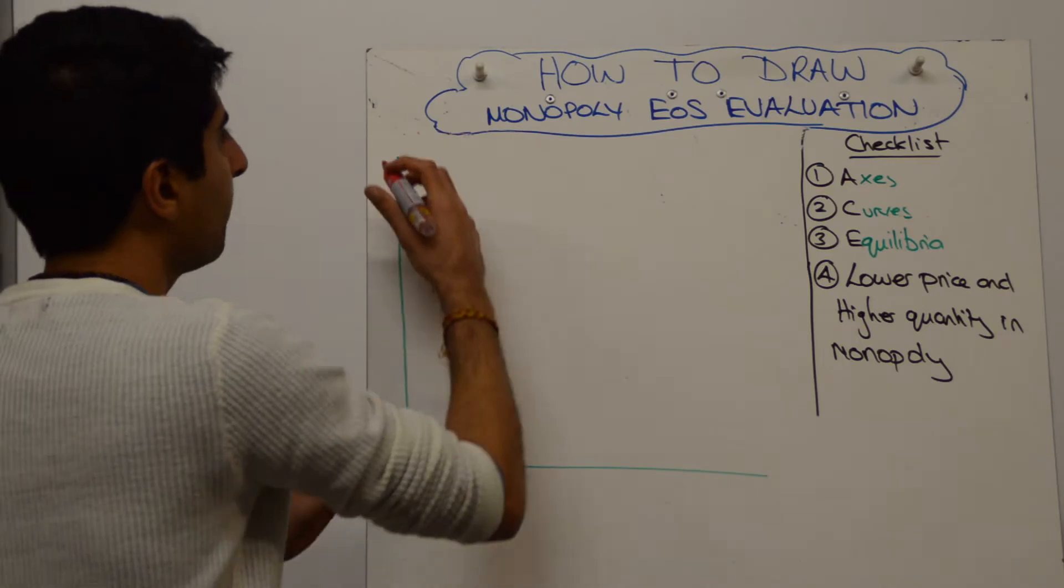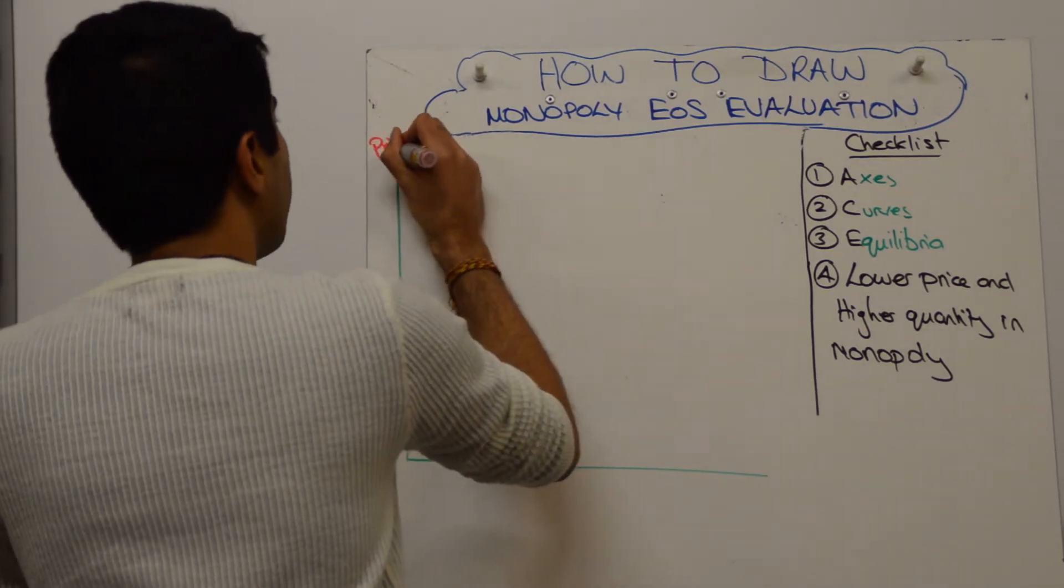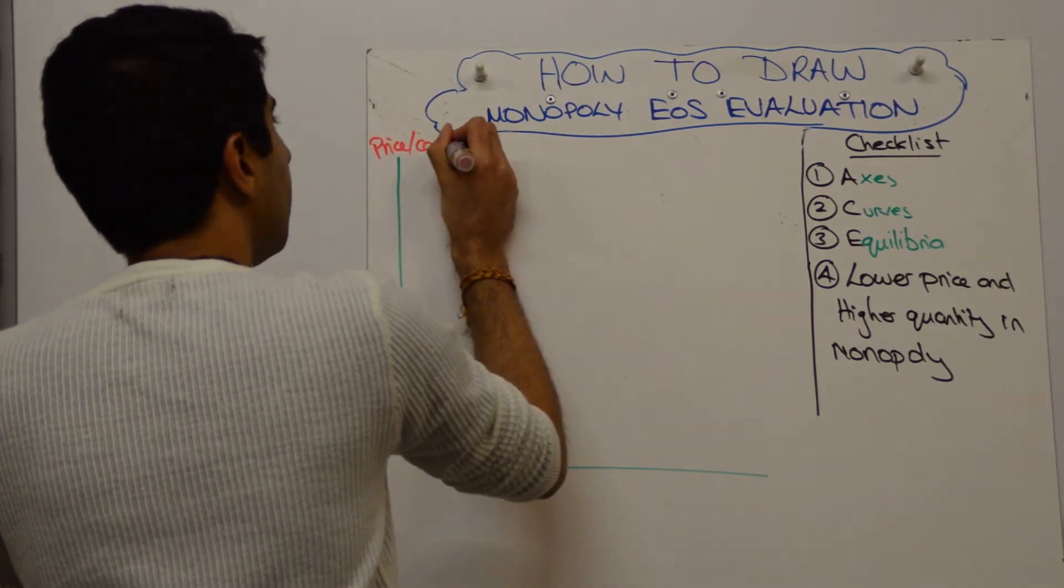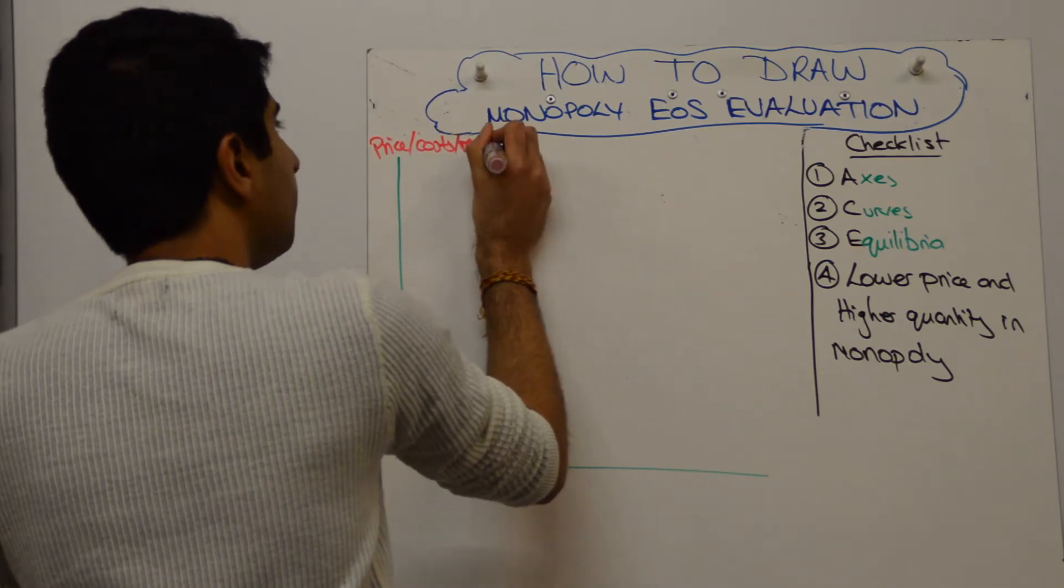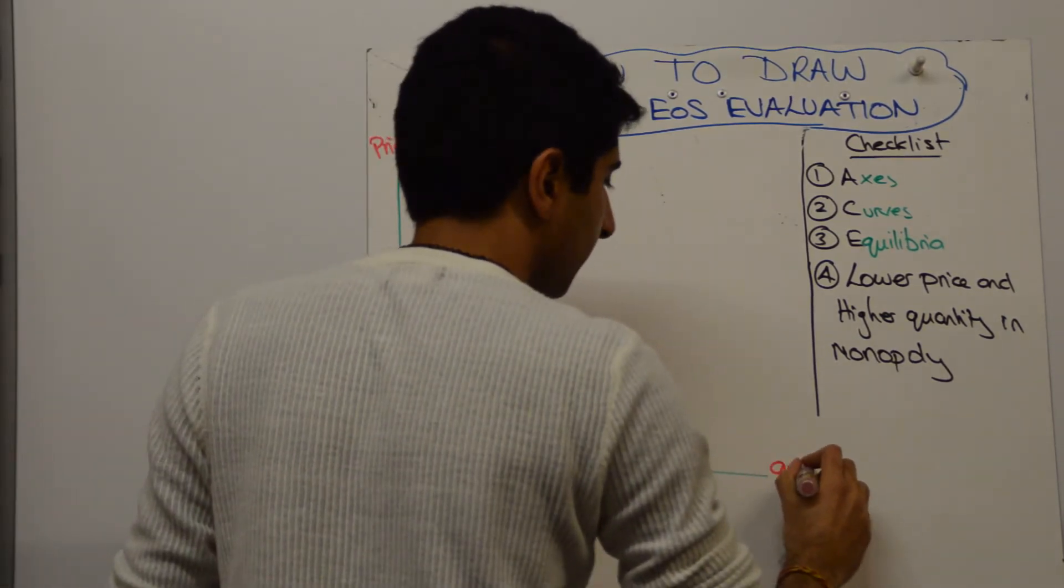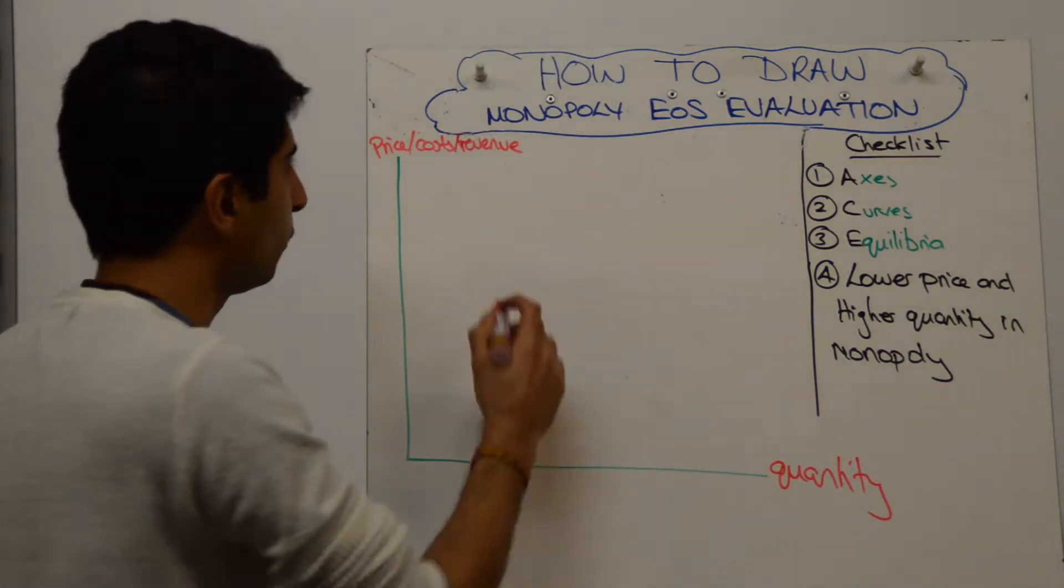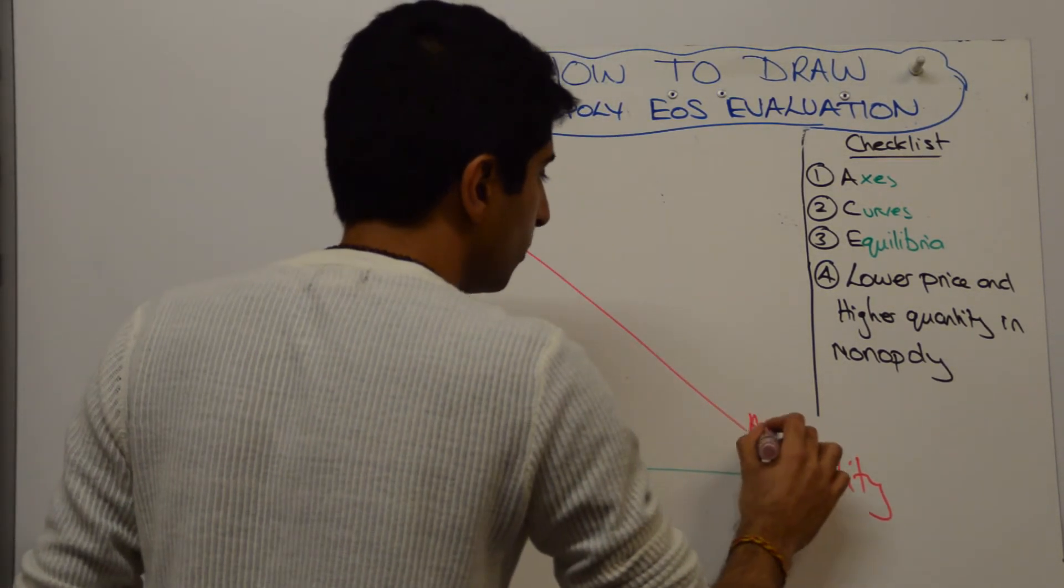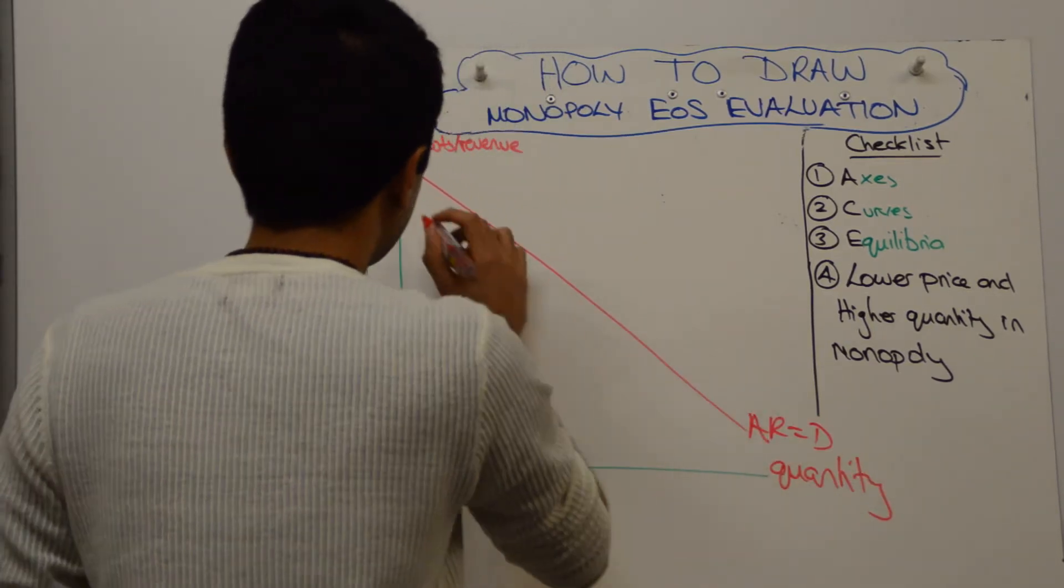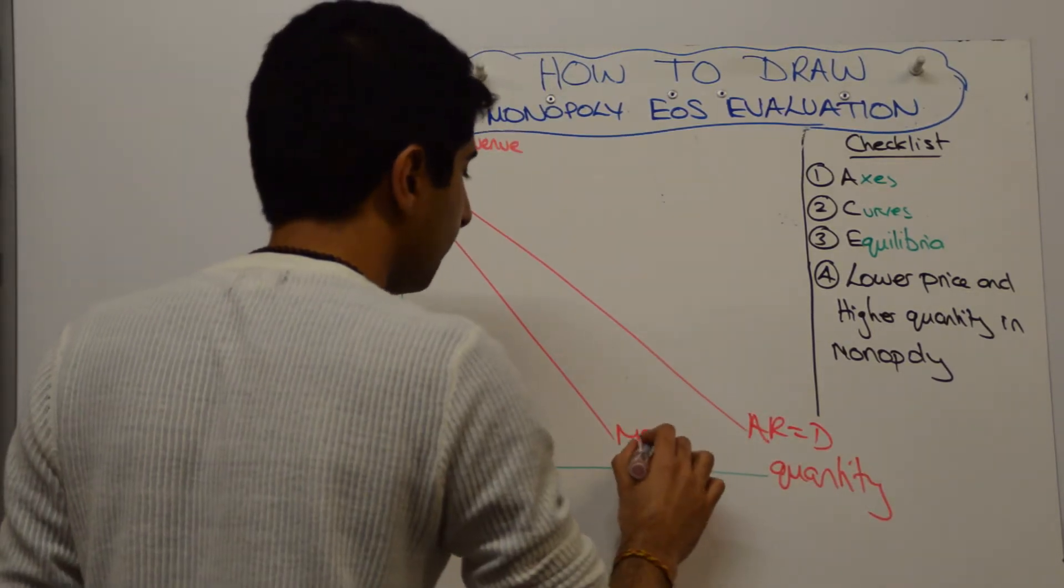How do we do it? Well, let's start by labeling the y-axis. Price, costs and revenue, as we're used to doing, and quantity on the x-axis. We start with our revenue curves as normal, so average revenue, which is equal to demand. Marginal revenue, which is twice as steep.